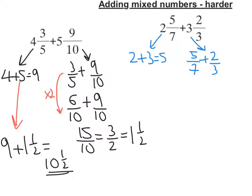Now 5 sevenths plus 2 thirds, I need a common denominator, well that would be 21. It's the lowest number that they both are in both their times tables.